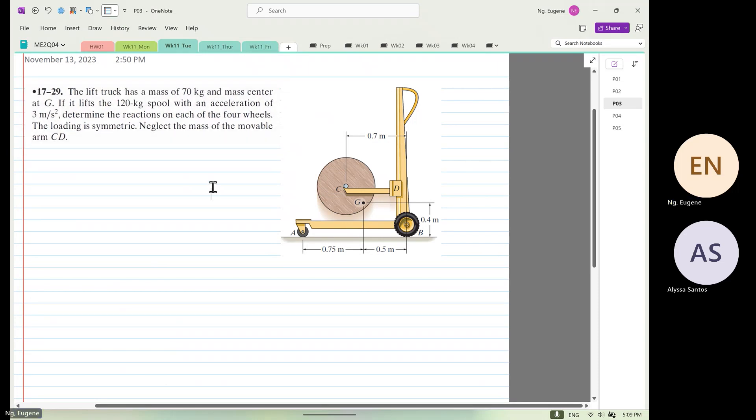The lift truck has a mass of 70 kilograms. So we know that this is known as the lift truck. And please don't ask me how do I know there's a lift truck. And then you have a mass center, and this lift truck is 70 kilograms. And this is known as the spool. And this spool is at 120 kilograms.